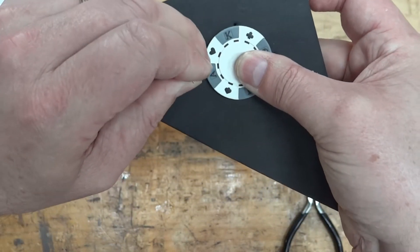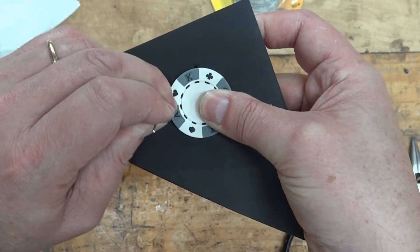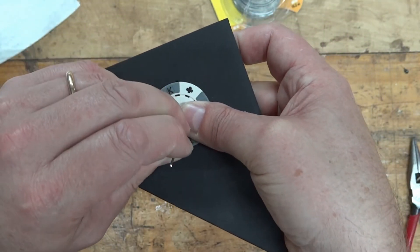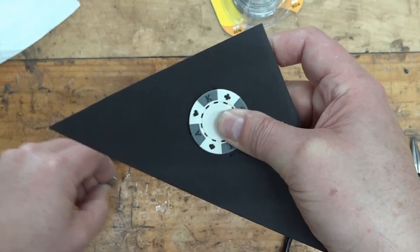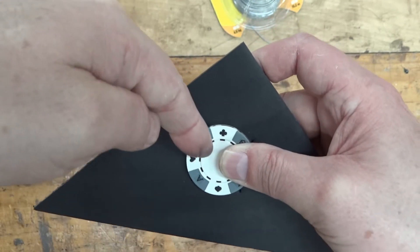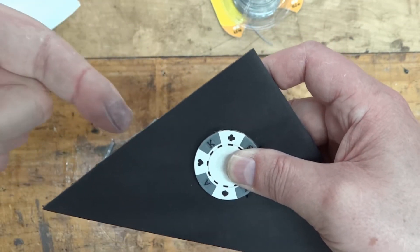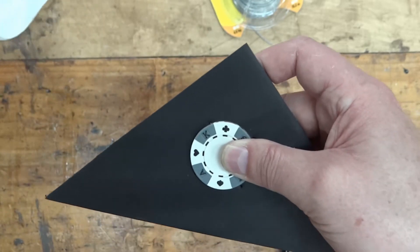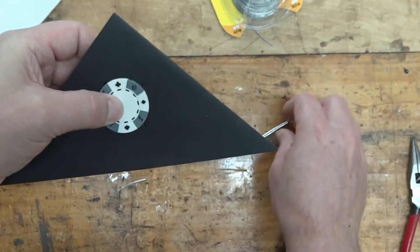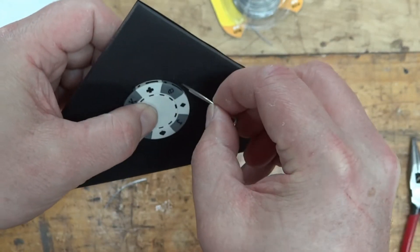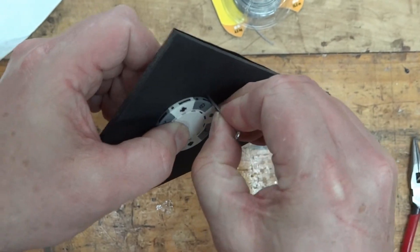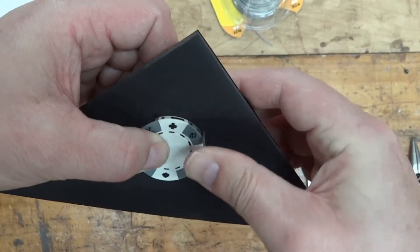You could angle it back a little bit so the wire kind of goes behind the coin, but that's not necessary. And then just push the wire through.